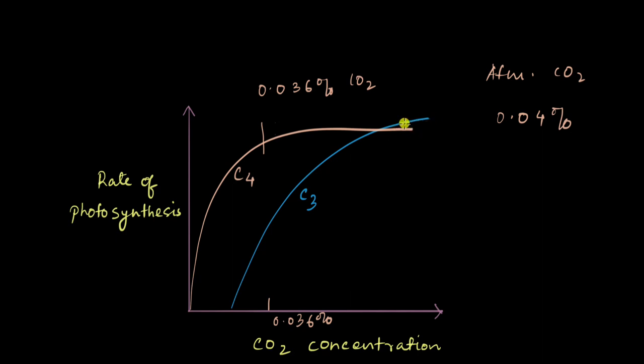So who is more efficient? Naturally, the C4 plants. And it's all because of their elaborate mechanism of the C4 pathway and the CO2 concentrations being high in the bundle sheath cells where the Calvin cycle takes place.